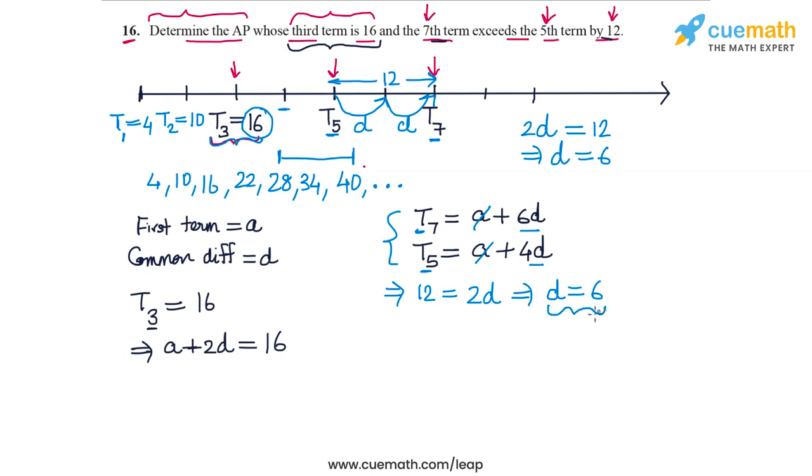Now if we plug this value of D equal to 6 into this equation, we get A plus 2D, 2 into 6, that's 12. So A plus 12 is equal to 16, and this means that A is equal to 4.